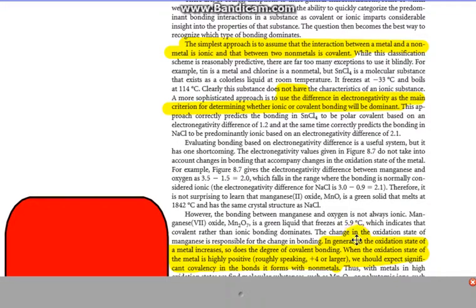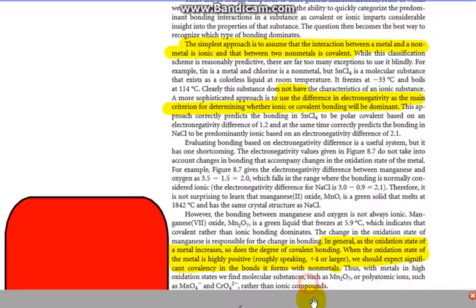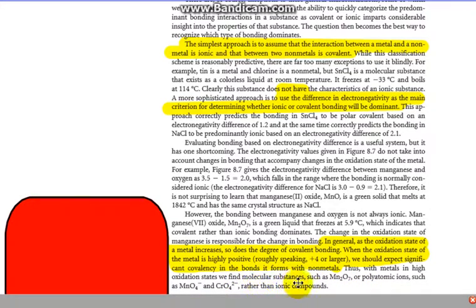In general, here's a key thing to note. In general, as the oxidation state, or you can think of as the charge, for example manganese 7 versus a smaller number, if it increases, so does the degree of covalent bonding. When the oxidation state of the metal is highly positive, so a rule of thumb is plus 4 or larger, we could expect significant covalency in the bonds it forms with nonmetals. Thus, metals in high oxidation states we find molecular substances such as Mn2O7. That 7 there indicates we're using manganese 7. We're hearing polyatomic ions such as MnO4.